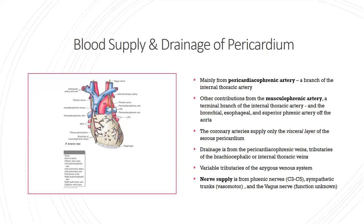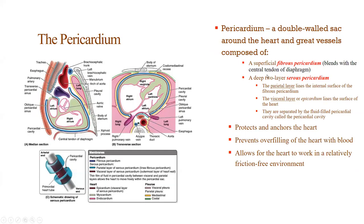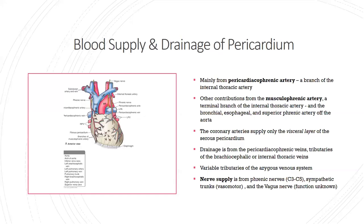The blood supply of the pericardium is mainly from the pericardiophrenic artery — the more important fact is that it branches from the internal thoracic artery, which is where test questions might focus. I see more questions on the nerve supply from phrenic nerves C3 through C5, the sympathetic trunk, and the vagus nerve. Focus on the layers, its role in pericarditis, and its nerve supply.